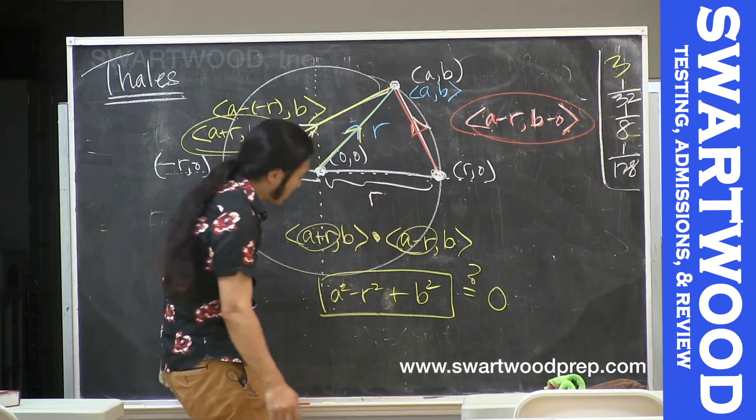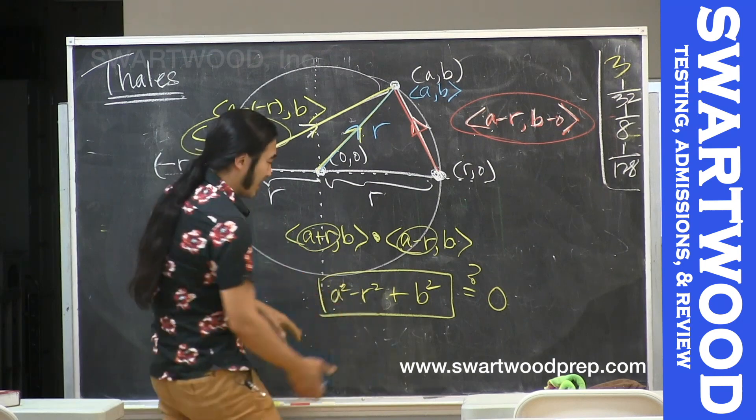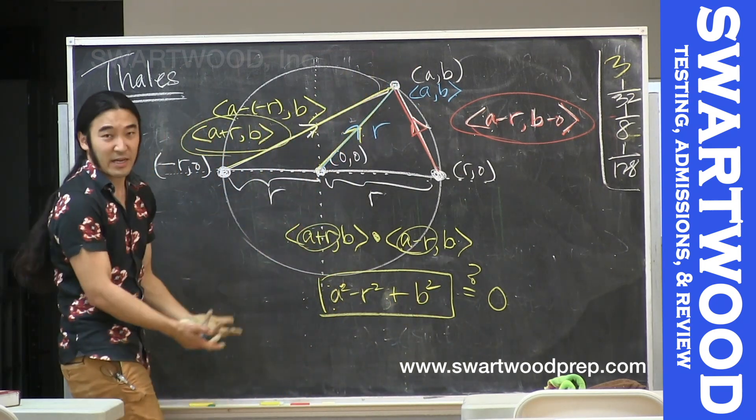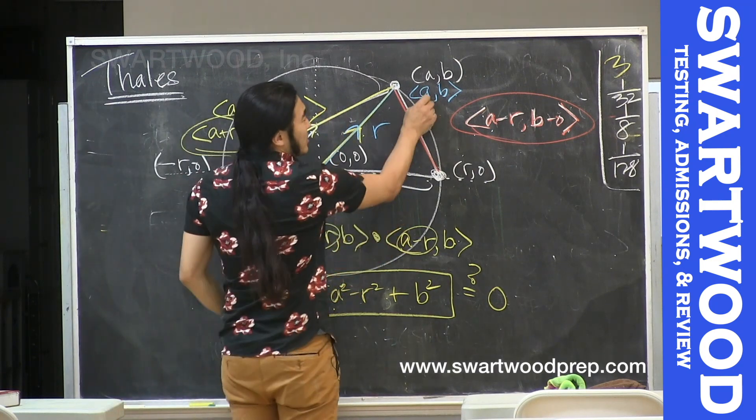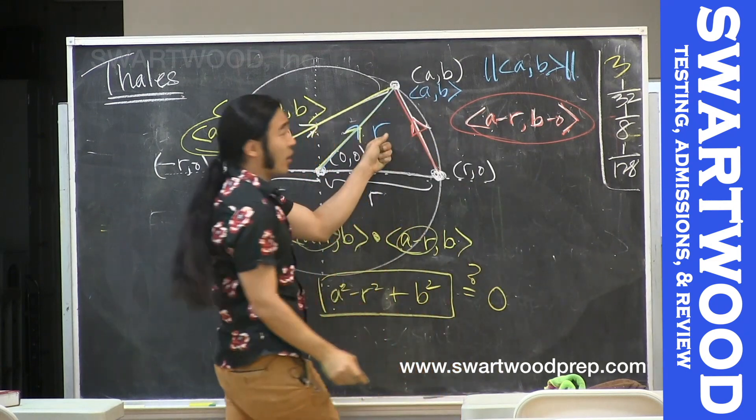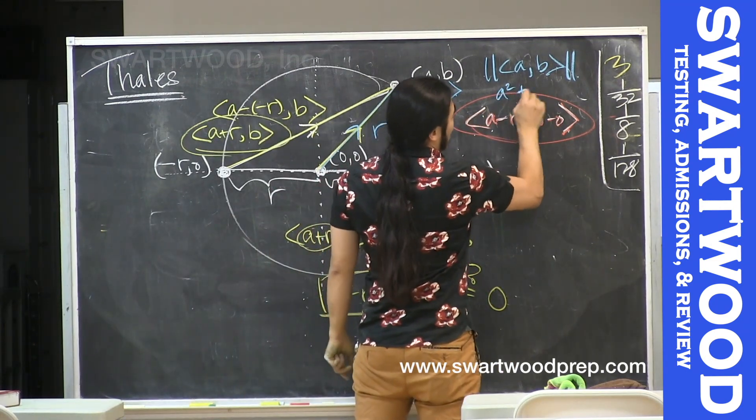Just a five-second recap: we needed a connection between R which is a fixed number and a and b which are arbitrary. Because we knew (a,b) was the endpoint of a radius, we do have that connection. So the magnitude of (a,b) is gonna be R. But the magnitude of (a,b) is √(a² + b²), and that's gonna be R.